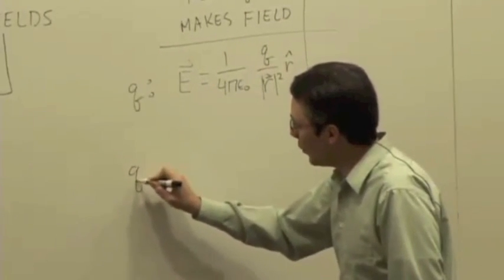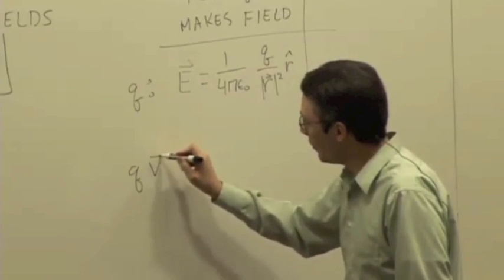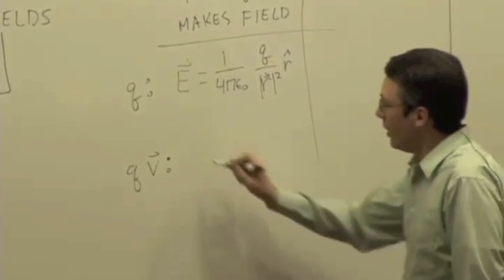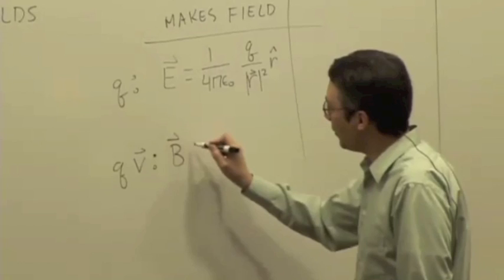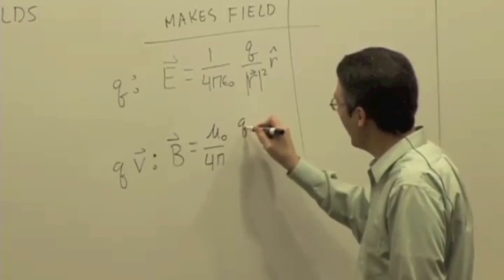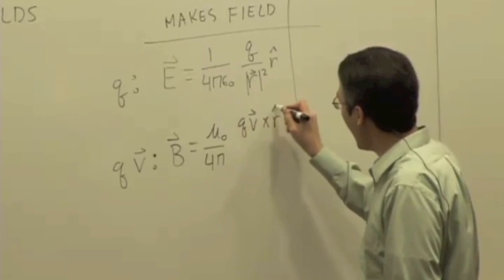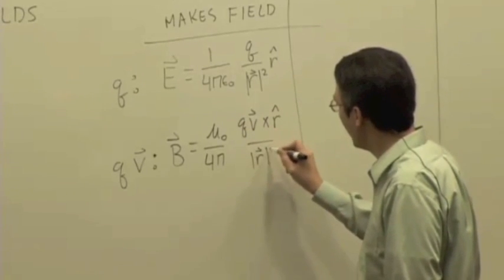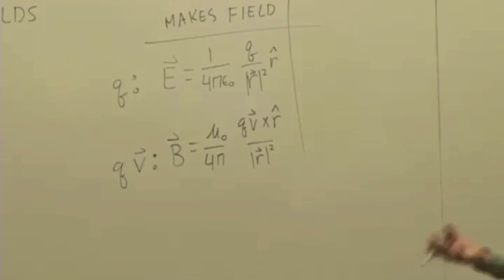If the charge is also moving, say charge times a velocity, then the charge makes a magnetic field. And that is mu naught over 4π, q of v cross r hat over r squared. And again, we can apply that to lots of moving charges in a current: current rings, current loops, magnetic dipoles, what have you. But it all again kind of flows from that basic idea. And so charges make fields in these ways.